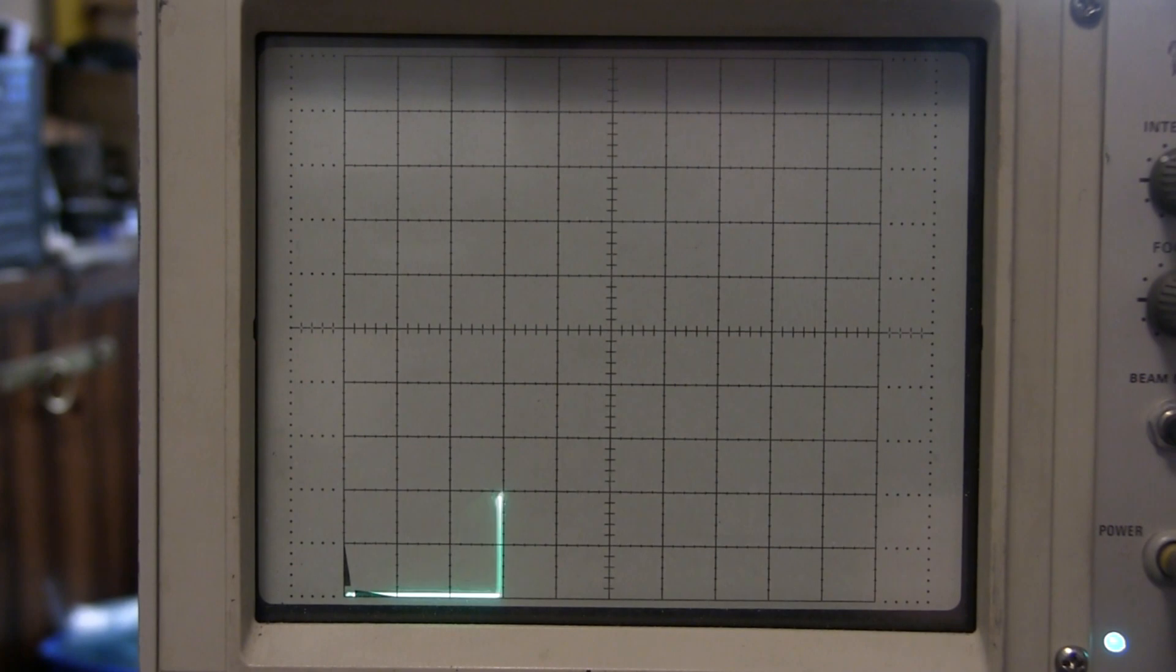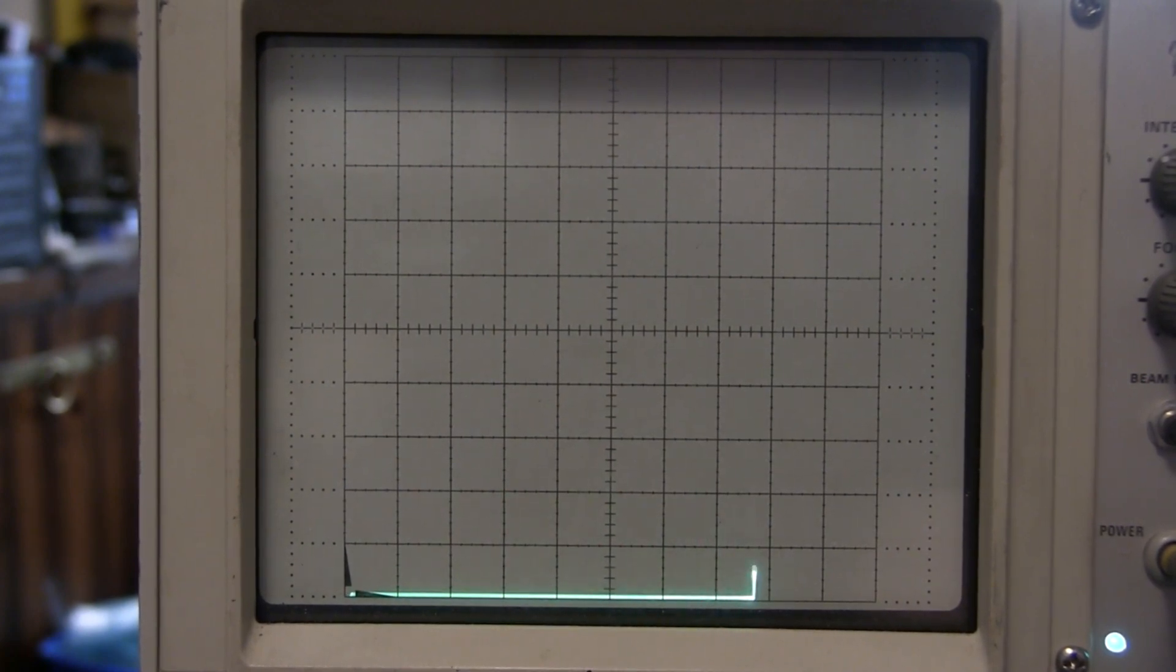As you advance the collector sweep, the vertical deflection represents the charging current into the capacitor, and the V-I characteristic of the diode displaced by the voltage on the capacitor.